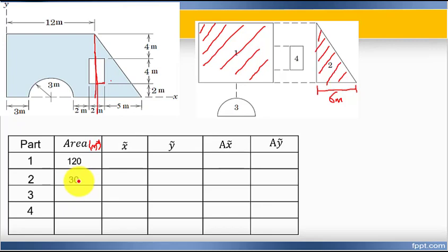For shape three, this is a semicircle. For semicircle, area equals one over two pi r squared. The radius of this semicircle is 3 meters.